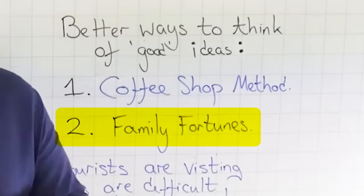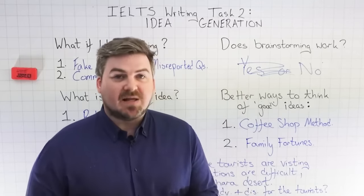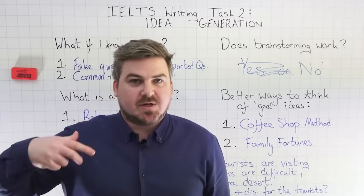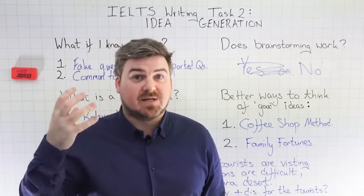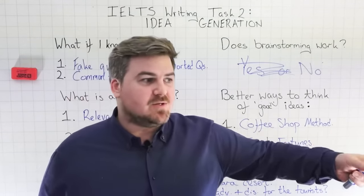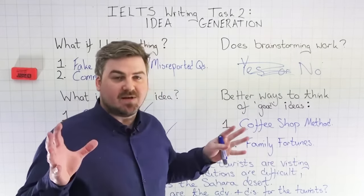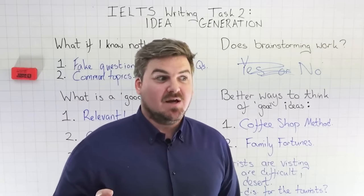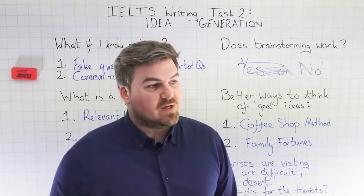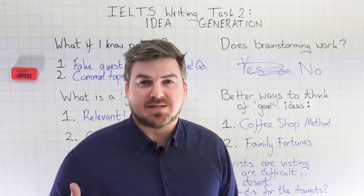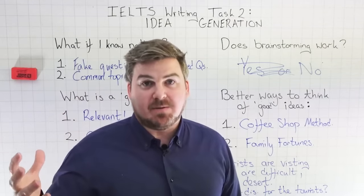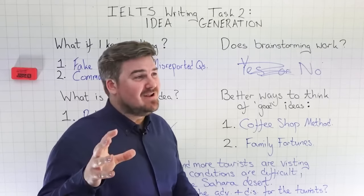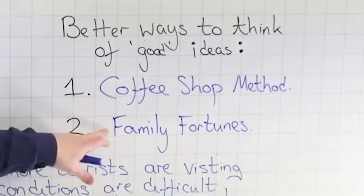Another way to think about this is something I call the Family Fortunes Method, which I developed with my VIP students because one technique will work for some students but not others — everybody's brains are wired differently. Some students I was showing the coffee shop method to were still having problems, still over-complicating everything. This is particularly with people who are very intelligent — about a third of my VIP course are doctors, engineers, lawyers, and highly qualified people. Those types of people tend to over-complicate everything and find it very difficult to keep things simple. So this technique is probably for them.